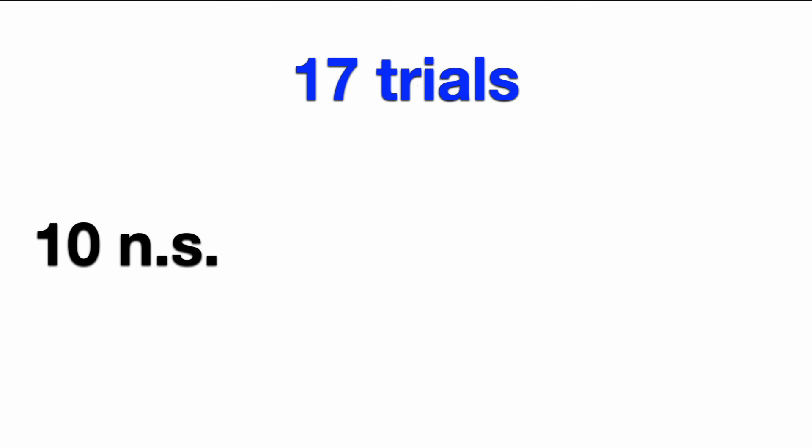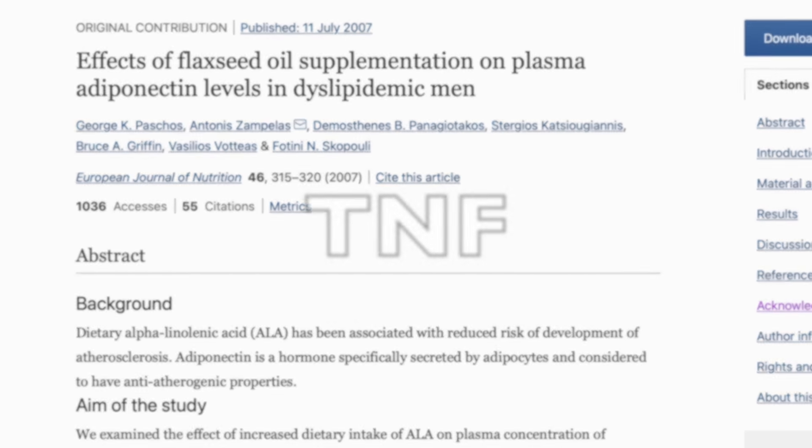When I'm investigating a field like this I already know going in that there's going to be variability — there's always variability. So I dug around for a study that goes against the trend, a study that finds an increase in any inflammatory marker on flaxseed oil. Altogether I went through 17 separate trials — 10 found no significant change in any inflammatory markers, 6 found a significant reduction in at least one, and I did find one with a significant increase in one marker. This trial reported an increase in the inflammatory marker TNF after taking flaxseed oil. But several other larger trials looked at this specific marker and did not see a significant change, including trials that used a larger dose or followed people just as long or longer. And the meta-analyses that pooled studies together weren't able to reproduce this result either.